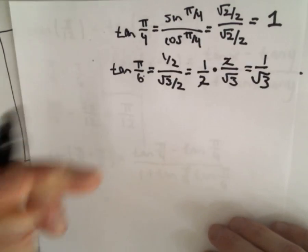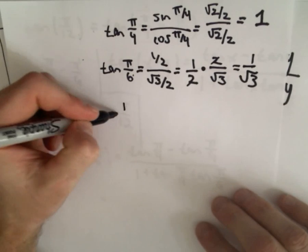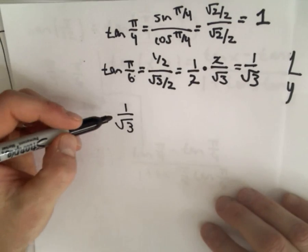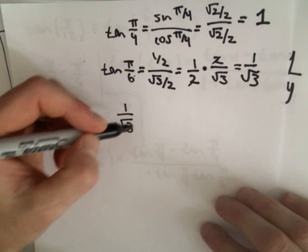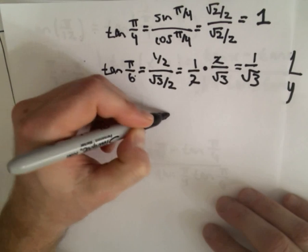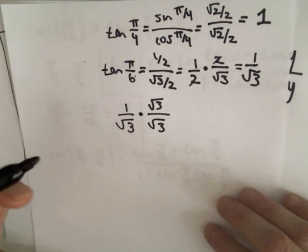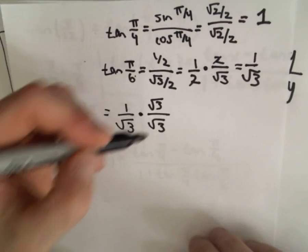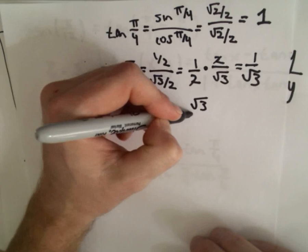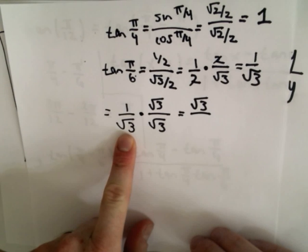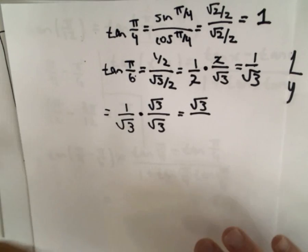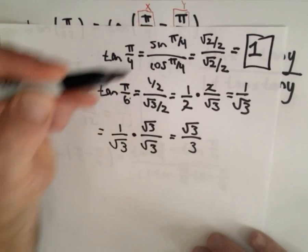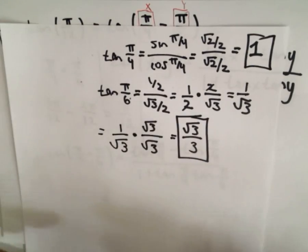A lot of teachers want to see the denominator rationalized. So we multiply 1/√3 by √3/√3 — we're just multiplying by 1, so we're not changing the value, just how it looks. That leaves us with square root of 3 on top, and the square root of 3 times the square root of 3 is 3 on the bottom. So tangent of pi/6 equals root 3 over 3. Now we have our values: tangent of pi/4 is 1, tangent of pi/6 is √3/3.